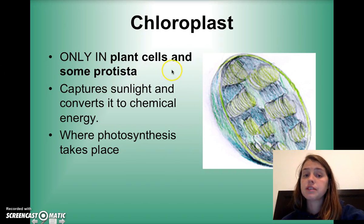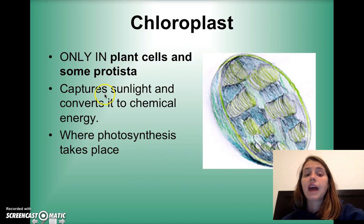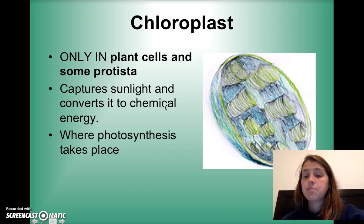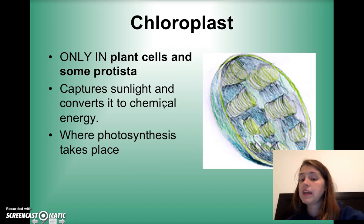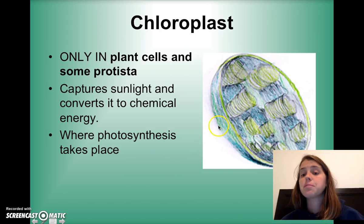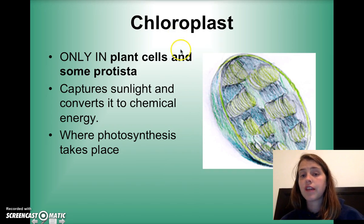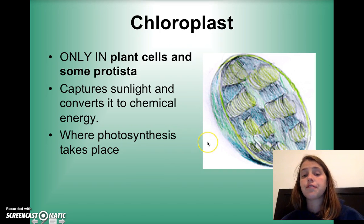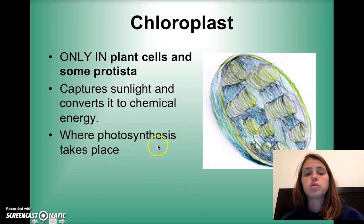Chloroplasts are only found in plant cells and some protists. They capture sunlight and convert it into chemical energy. Plants can't eat, so they have to make their carbohydrates. The chloroplast captures sunlight's energy and converts it into chemical energy the cell can use. This process is called photosynthesis, and we'll talk about that more later.